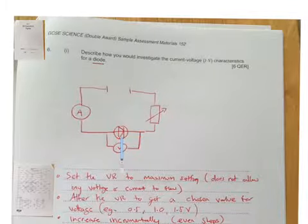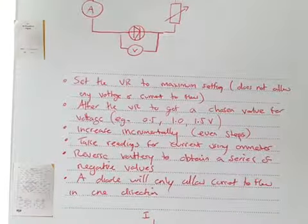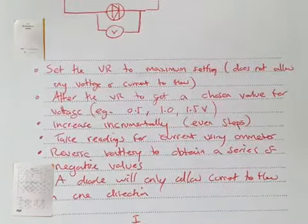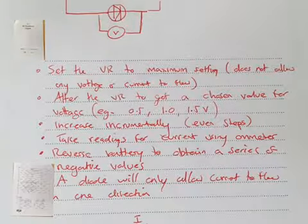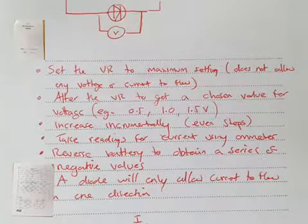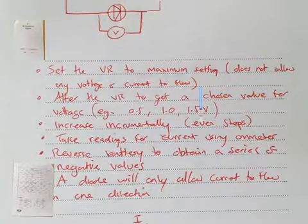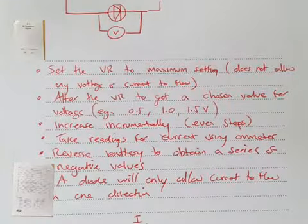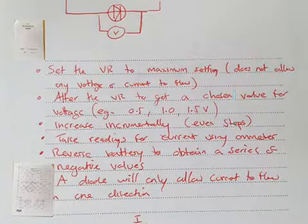I've got six big bullet points here. Set the VR, the variable resistor, to maximum setting so it doesn't allow any voltage or current to flow, so you should have readings of zero. After that, alter the VR to get a chosen value for voltage. I haven't put something in there which I keep forgetting.